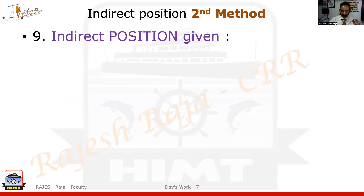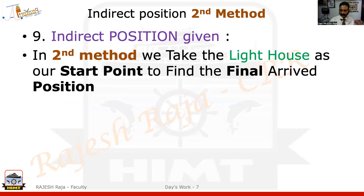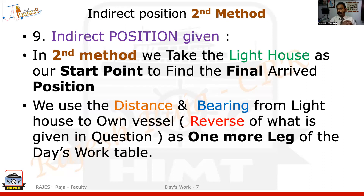Now let's look at Method 2, which is slightly tricky. In Method 2, since I know the lighthouse lat/long, I'm going to take that as the start point for the whole question. I know the reverse bearing and range from the lighthouse to my initial position (alpha), so I'll use that as one more leg. I'm going to insert this leg into the previous table.